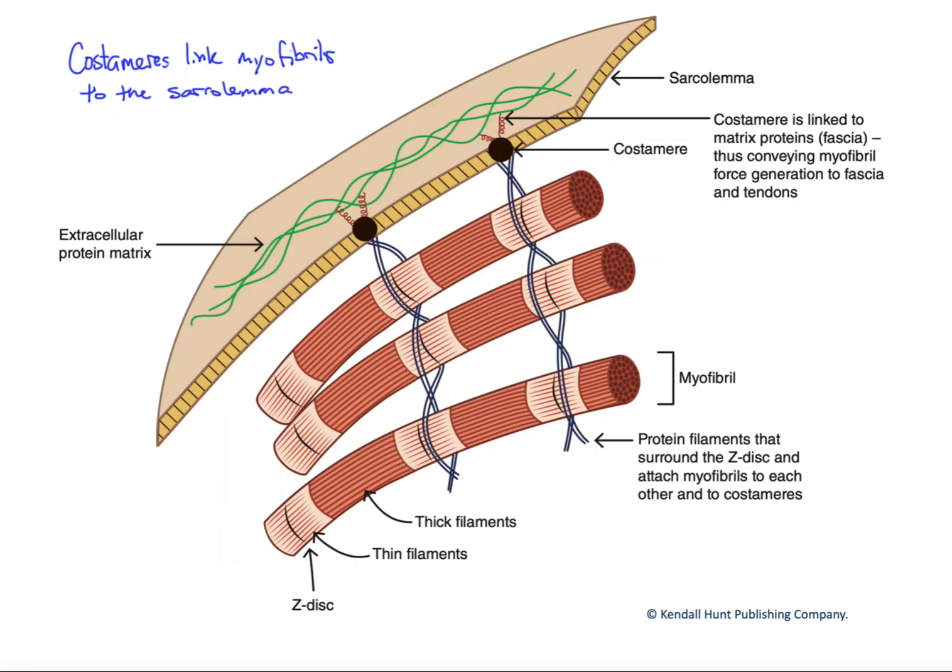In this video, we want to focus on a complex of proteins referred to as a costamere and how those are important to linking force generation within sarcomeres, end-to-end within myofibrils, to the extracellular matrix and onward to the tendon.